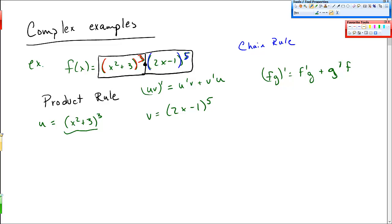So I need to find the derivative of u in order to use the product rule. And to find the derivative of u now, now I've broken it down into this smaller piece. And I say, okay, now this is my chain rule. I'll go ahead and use the chain rule. u prime is 3, x squared plus 3, remove 1, so 2. And then I have to multiply by the derivative of the inside, which is 2x.